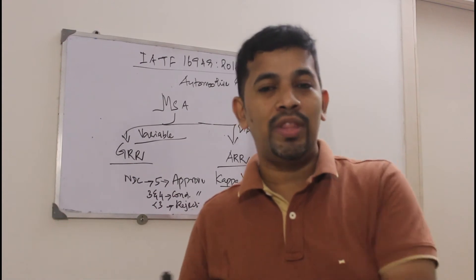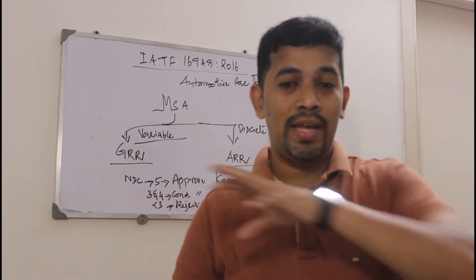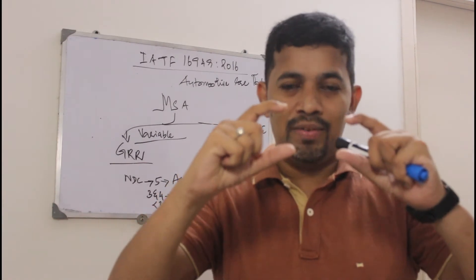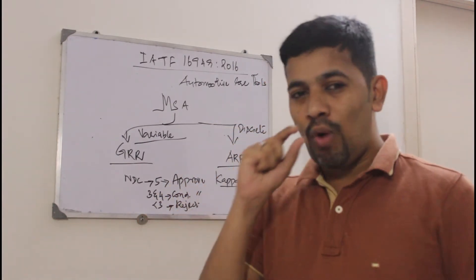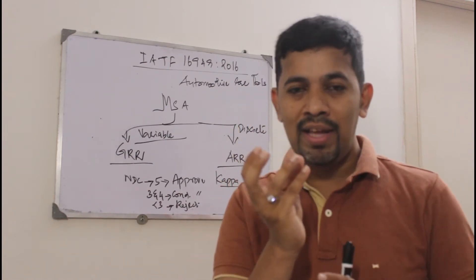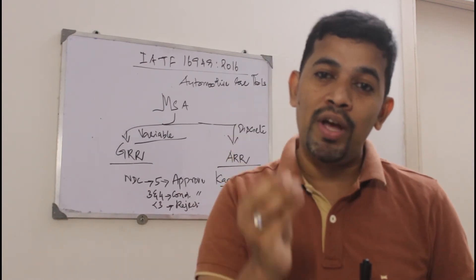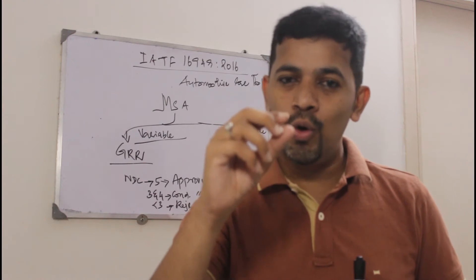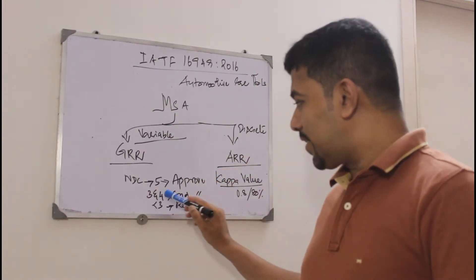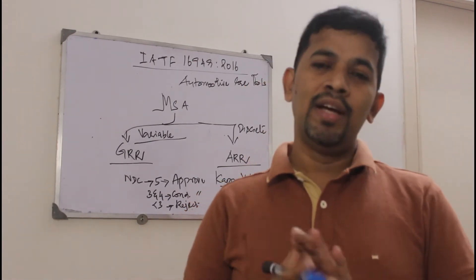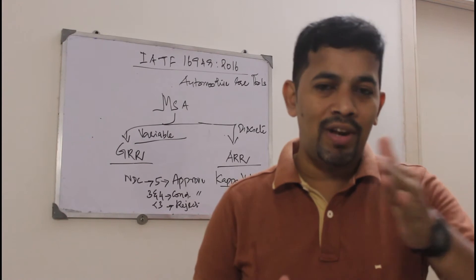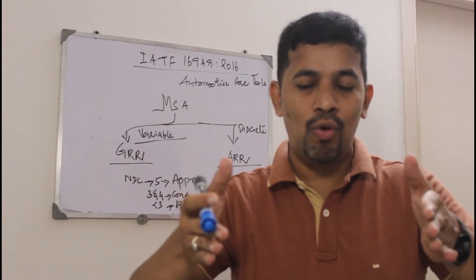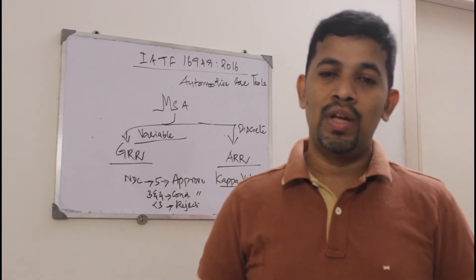Reproducibility relates to the number of appraisers — appraiser A, B, C, and so on. With the combination of repeatability and reproducibility, if the NDC value is 5 or greater, the variability in both is lower. On the other hand, if NDC is 3 or 4, the variability can be in the range of 11% all the way to 30%, and you need to conditionally approve.